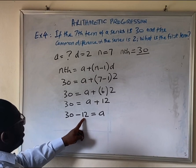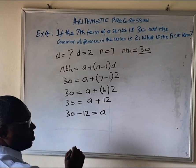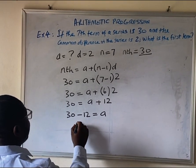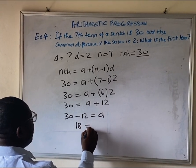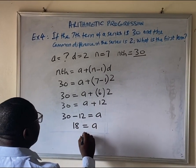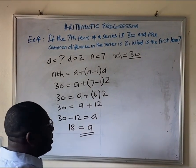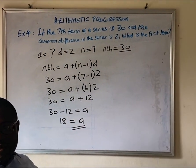And 30 minus 12 will give us what? 18. So, a is 18. That is the answer. Thank you.